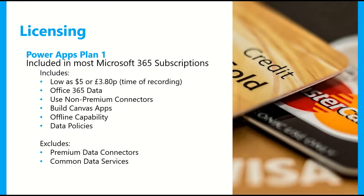To work with PowerApps of any type you will need a license of some description. There are two different types of PowerApps plan licenses. The first is Plan 1, which is included with most Microsoft 365 subscriptions. If you've already got something like Business Basic, Business Standard, Business Premium, E3, or E5 enterprise license, you will have PowerApps Plan 1 included. If you don't, you can get them as low as $5 a month, or £3.80 per month at the time of recording — so it's worth checking the Microsoft website frequently as prices may change.